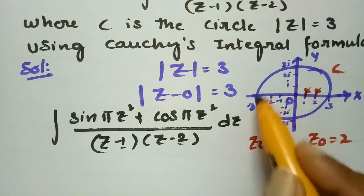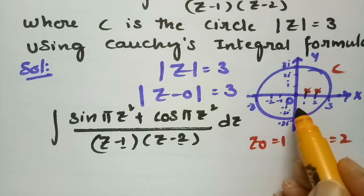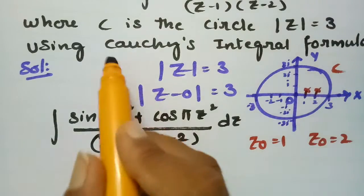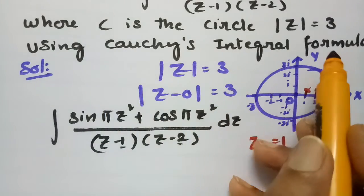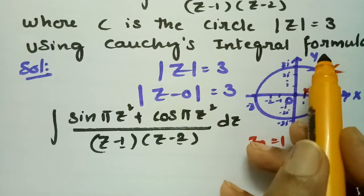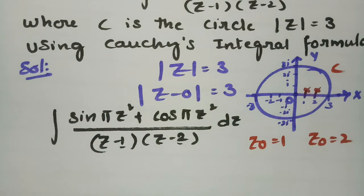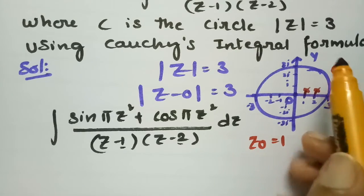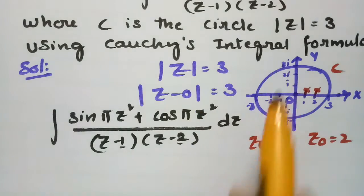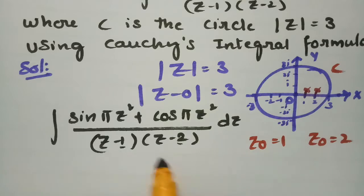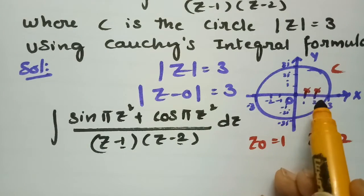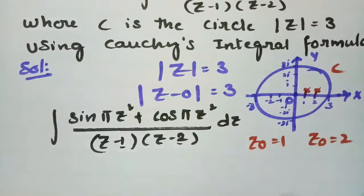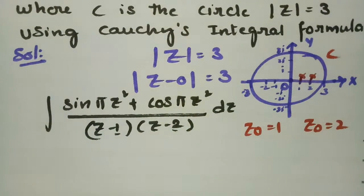If the given singular points are within the circle or on the circle, Cauchy's integral formula is applied. If they are outside the contour, it is not applied. In this case, both 1 and 2 are within the contour, so we can use Cauchy's integral formula.